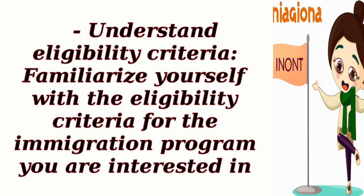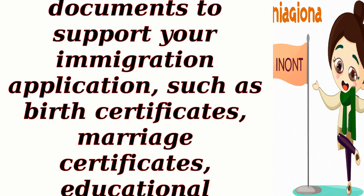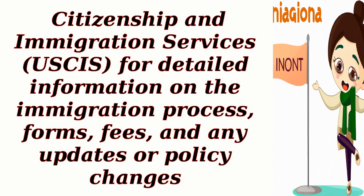Understand eligibility criteria — familiarize yourself with the eligibility criteria for the immigration program you are interested in. This may include factors such as education, work experience, language proficiency, and financial stability. Gather required documentation — collect all necessary documents to support your immigration application, such as birth certificates, marriage certificates, educational transcripts, and proof of financial resources. Follow official guidelines — refer to the official website of U.S. Citizenship and Immigration Services, USCIS, for detailed information on the immigration process, forms, fees, and any updates or policy changes.